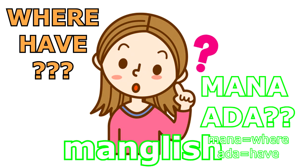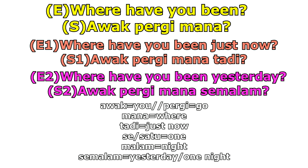For the phrase "where have you been," in Malay you will translate it as "awak pergi mana?" I will give you the link below for the video where you can study past tense, present, and future. This phrase is a totally general phrase — "awak pergi mana?" The indication of past tense is when you add the word "tadi" (just now): "awak pergi mana tadi?" Or "awak pergi mana semalam?" (yesterday).